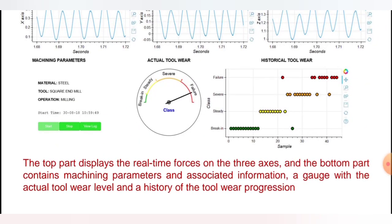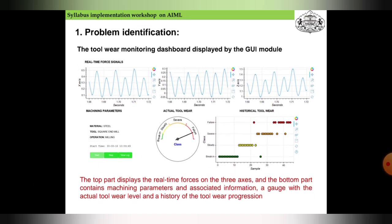So the top part displays the real-time forces on three axes, and the bottom part contains machining parameters and associated information, a gauge with the actual tool wear level and history of the tool wear progression. This is how machine learning can help us identify with the plottings.